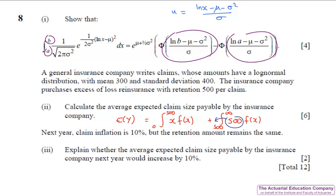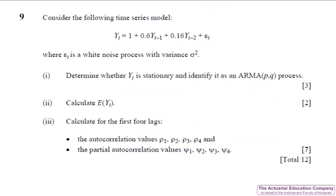In the final part of the question claims are increased by 10% and we have to explain whether the average expected claim will also increase by 10%. Notice it says explain so we're going to have to give a reason why. Essentially the claims that we do pay are increased but the claims that are passed on to the reinsurer are not increased and so it won't quite increase by the full 10%.